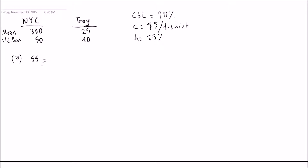Since this is a continuous review policy, the safety stock formula is SS = Z × √L × σ_D, where σ_D is the standard deviation of demand. We need to find Z = F⁻¹(CSL), the inverse of the standard normal CDF at CSL = 90%. So we go to the Z-table and look for the value corresponding to 0.9.